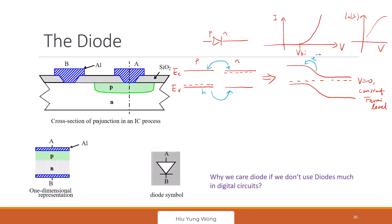Electrons go one way, holes go the other. What happens if electrons leave the N-side? That region becomes depleted of electrons — just like gas diffusion. I have a lot of electrons on the N-side; when they touch, they all go across. Similarly, holes on the P-side all diffuse to the right. So I have a depletion of electrons on one side and a depletion of holes on the other.